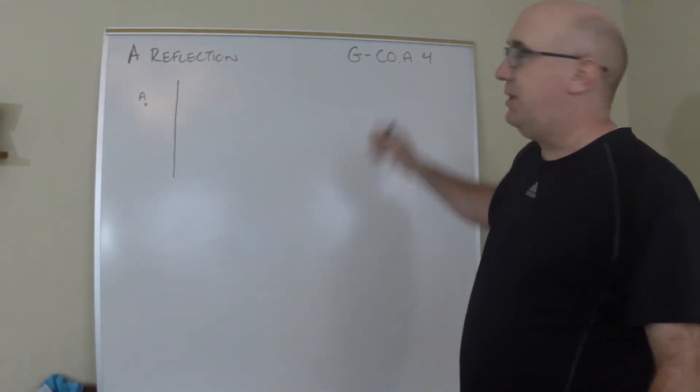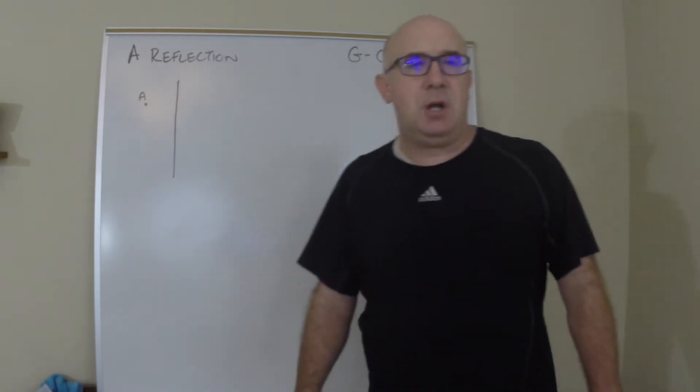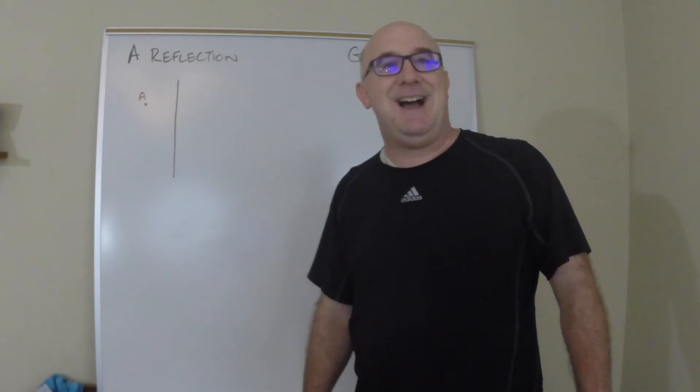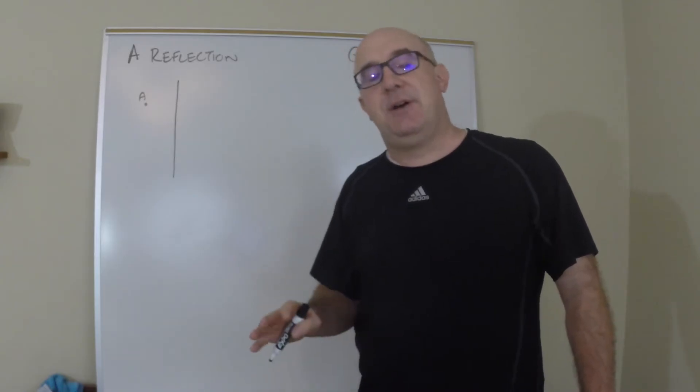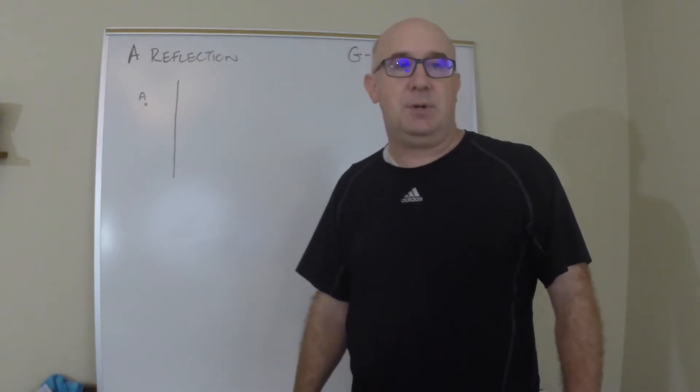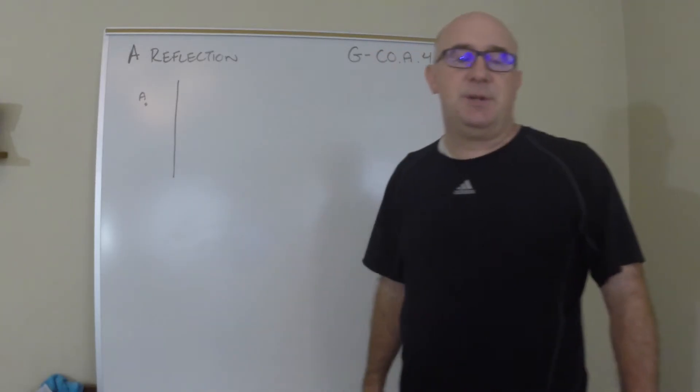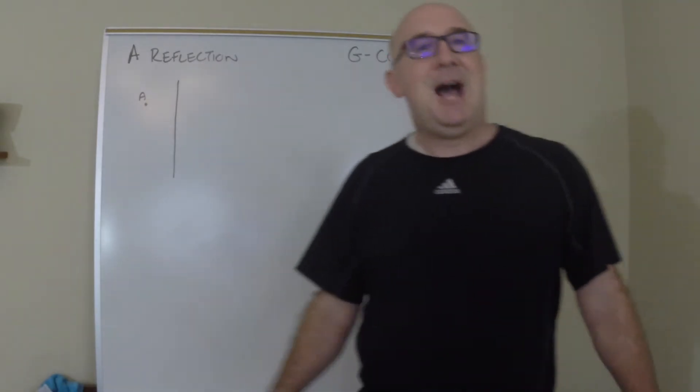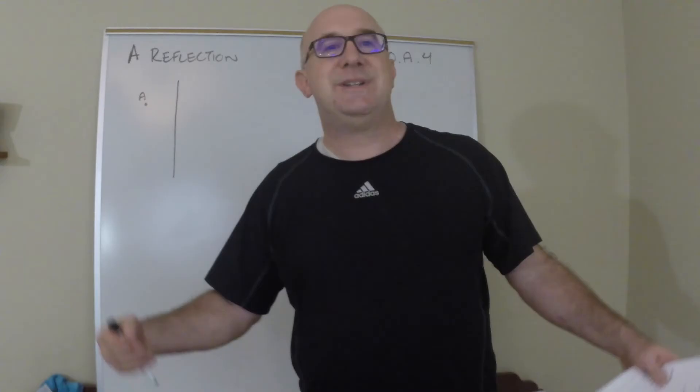Alright, this is GCA4, and it's all about the properties of isometric transformations. I want to slow down here and hit it a little bit harder because these are really important to understand. The first one is the reflection - how does a reflection work, how is it defined, what is actually going on behind the scenes?